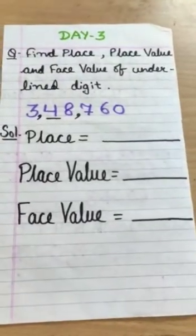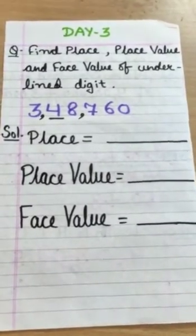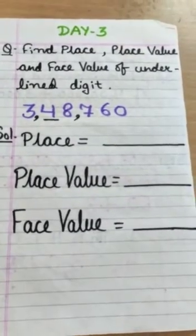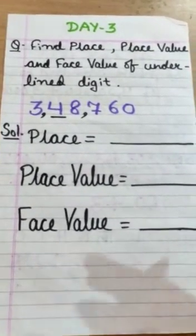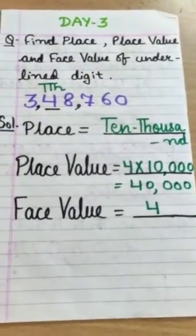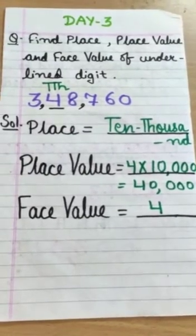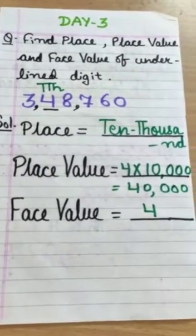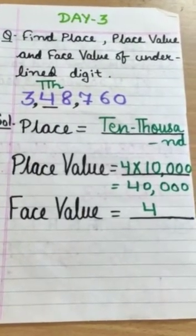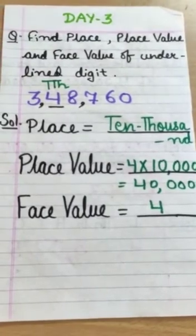Now, it's your turn. Find place, place value and face value of underlined digit, that is 4. So, according to you, what will be the place of this 4? These are the answers. I hope you have done this. The place of 4 is 10,000. The place value is 4 multiply with 10,000 equals 40,000. And the face value is only 4.